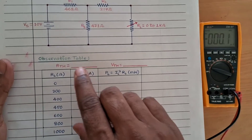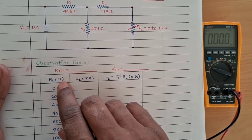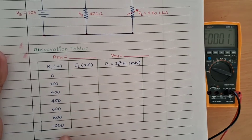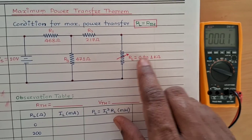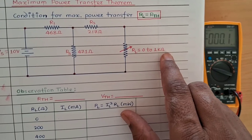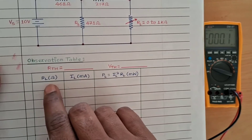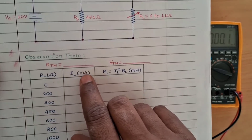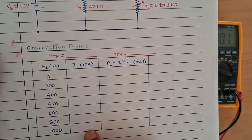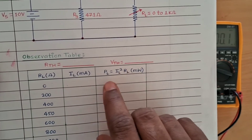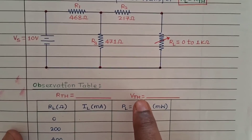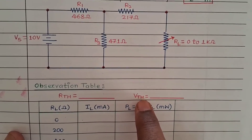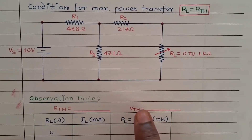First, we will change the value of load resistance from zero to one thousand ohms, since our load resistance has a range of zero to one kilohm. For corresponding values of load resistance, we will measure the load current, and then using the power formula we will calculate the power. Our first aim is to measure Vth and Rth.